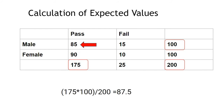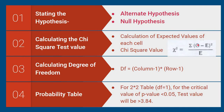By applying this formula, the expected value of this particular cell becomes 87.5. Likewise, we need to calculate the expected value of all the cells. Then we calculate sigma of (observed minus expected) whole square divided by expected, which will yield the chi-square value.